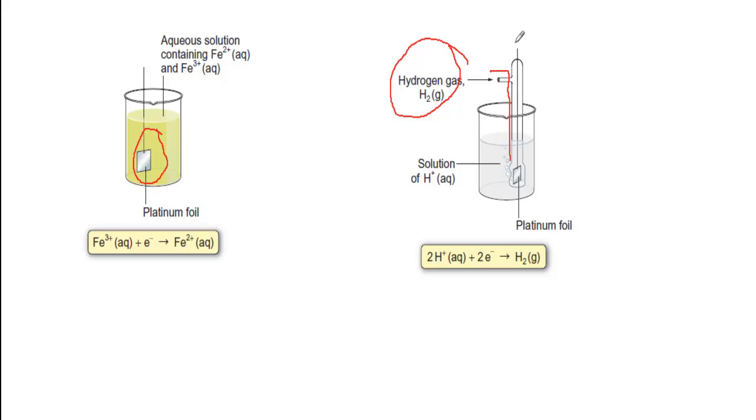So there we have two electrodes, and let's just think about how we connect the two together. All we would do as usual is to have a wire, might have a bulb in there to light up or we might have a high resistance voltmeter. And then we would also, of course, to complete the circuit, we would need a salt bridge so that any buildup of ions on one side could be balanced out by flowing through the salt bridge.